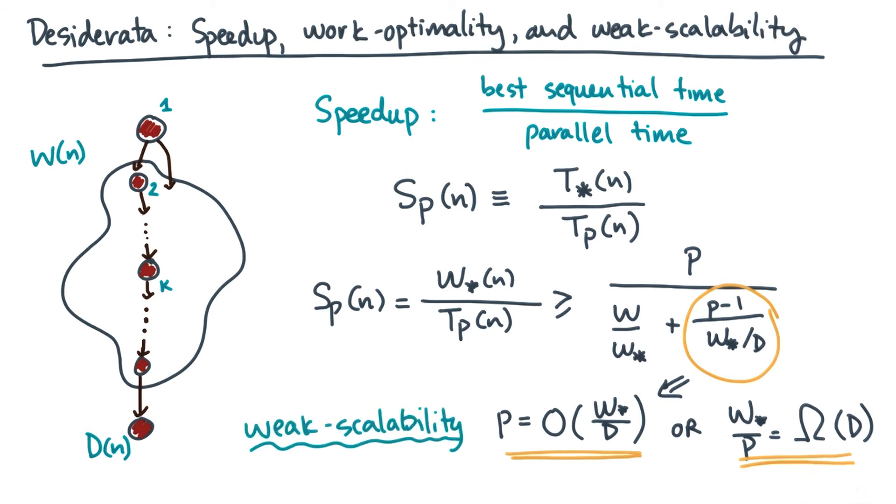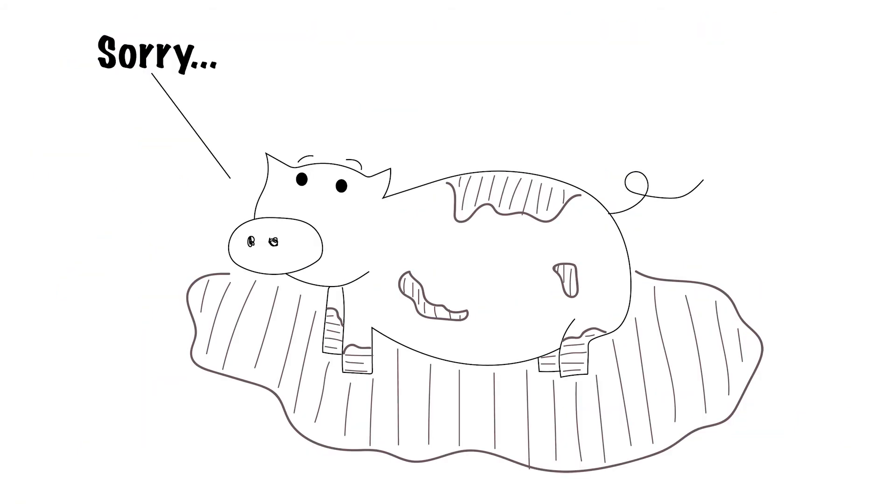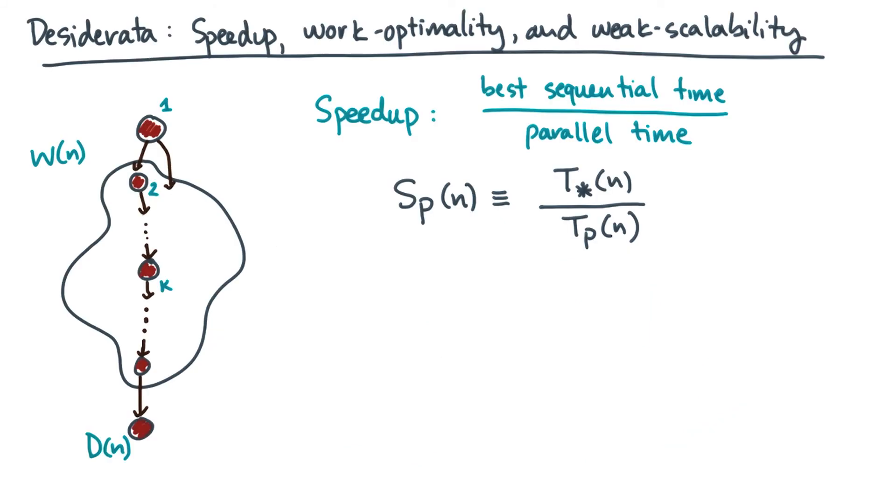In the parallel computing literature, this is called weak scalability. So basically what it says is, as you increase the concurrency of the machine, then if you want to get good scaling, you might need to increase the problem size. Okay, that was a little messy. Let's try to recap the algorithm design goals you just derived.